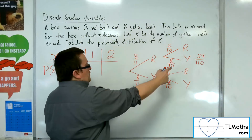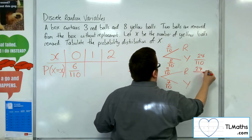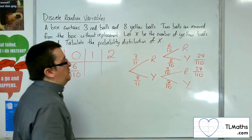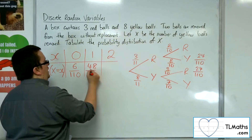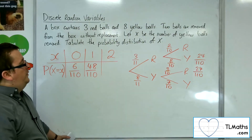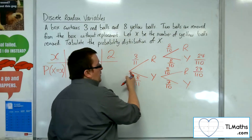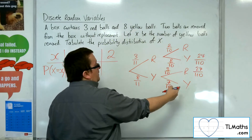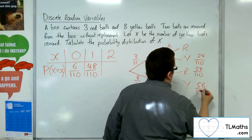Yellow then red gives eight times three, so 24 out of 110. Combining those two paths gives 48 out of 110 for x equals one. If two yellows were pulled out, we'd have eight over 11 times seven over 10, so that would be 56 over 110.